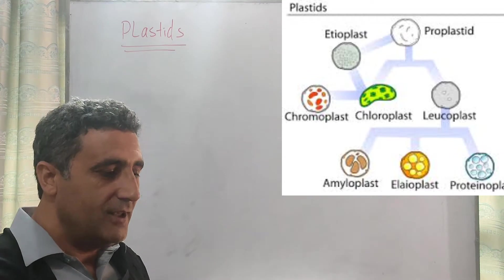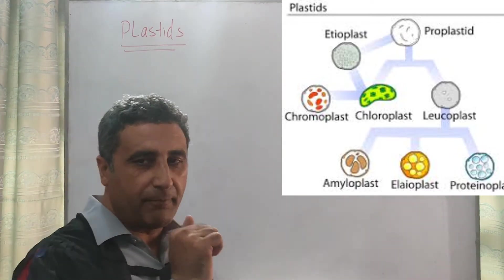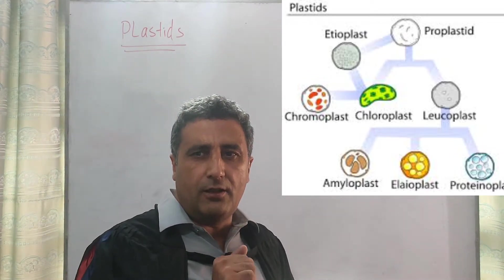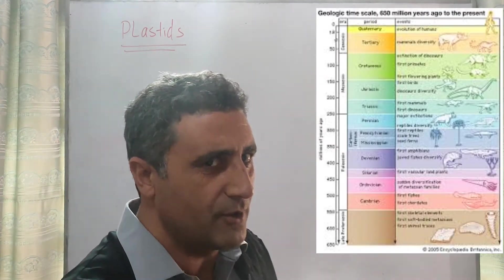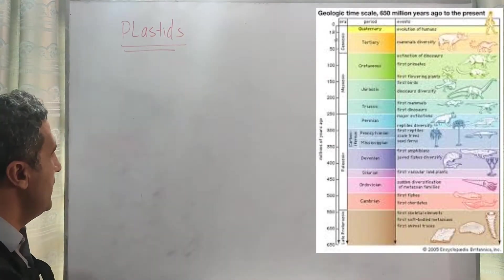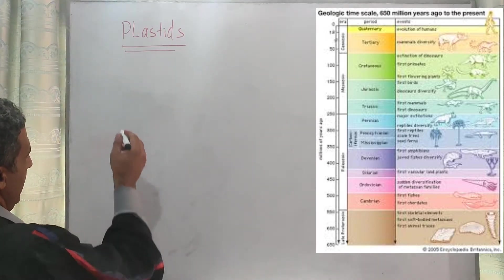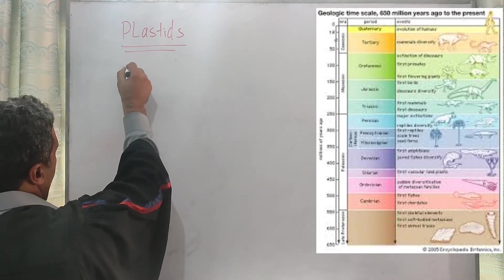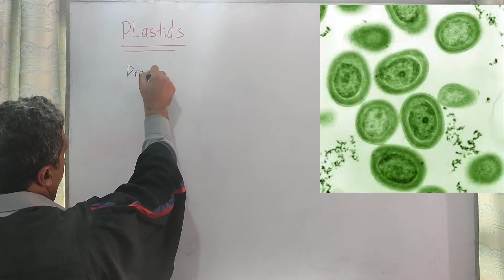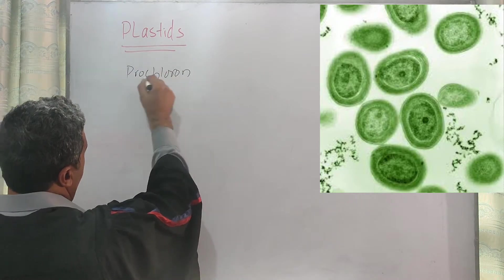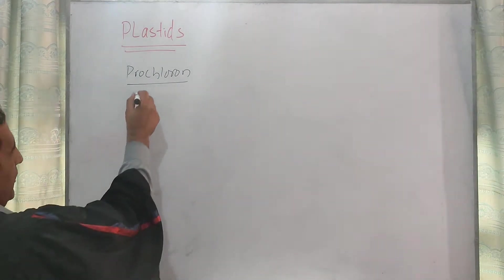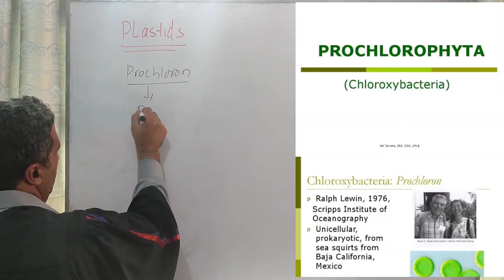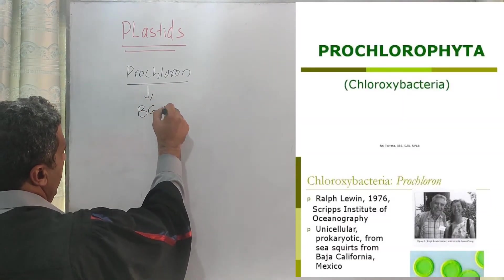Let's start from the beginning. Long, long ago, billions and gazillions of years ago, there was an algae, Prochloron-like algae. What is Prochloron? Prochloron is an algae which belongs to prokaryotes.